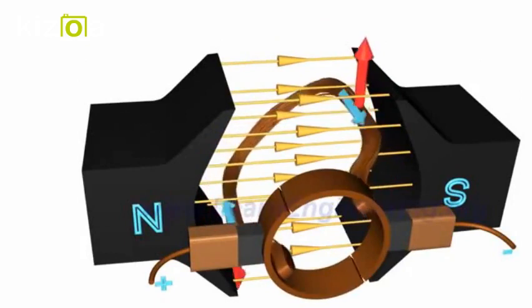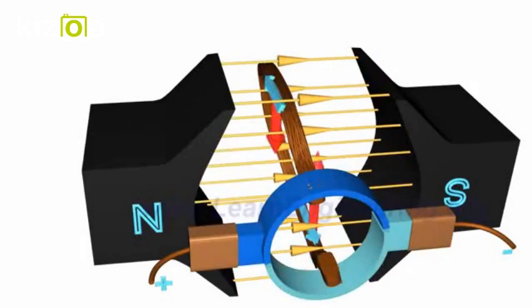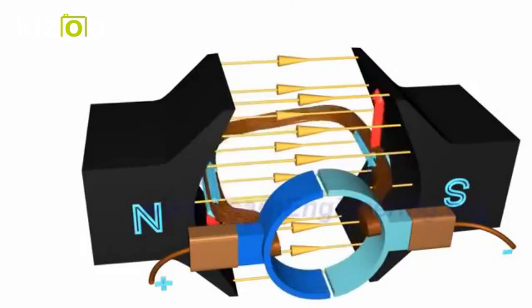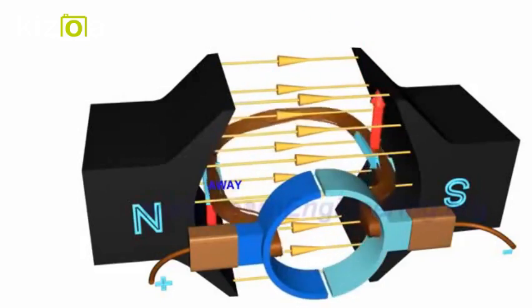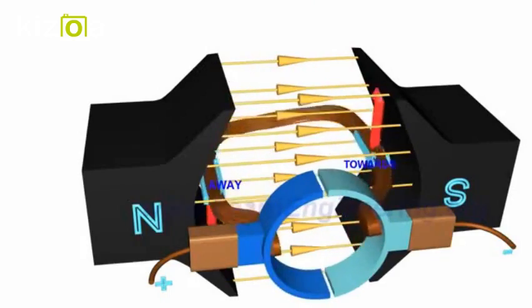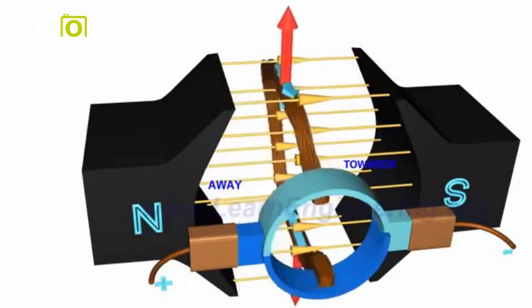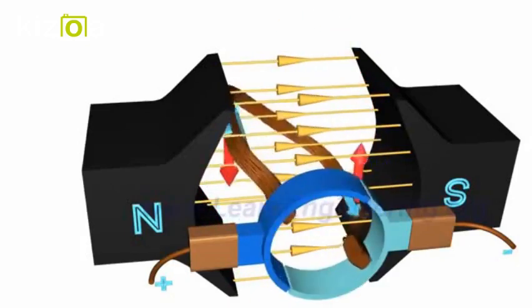You will notice that as the coil rotates, the commutator rings connect with the power source of opposite polarity. As a result, on the left side of the coil, the electricity will always flow away, and on the right side, electricity will always flow towards. This ensures that the torque action is also in the same direction throughout the motion, so the coil will continue rotating.